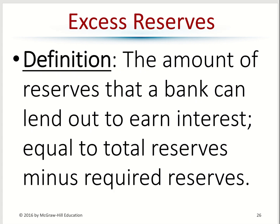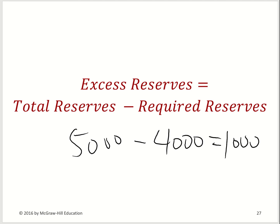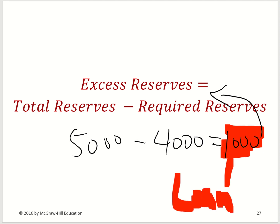Excess reserve is any extra cash on hand beyond your required reserve. To find excess reserve, take your total reserve and subtract the required reserve. For our previous example, suppose the bank is currently holding $5,000 but is required to hold $4,000. The excess reserve is $1,000, and the bank can loan out that excess reserve to earn more profit.